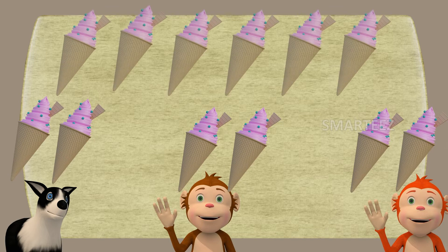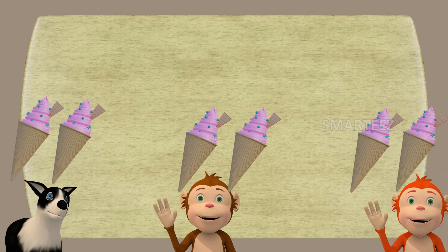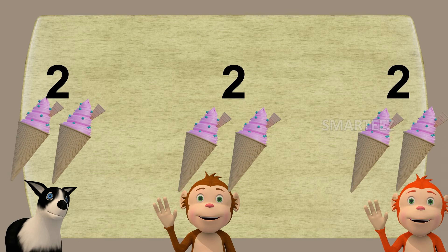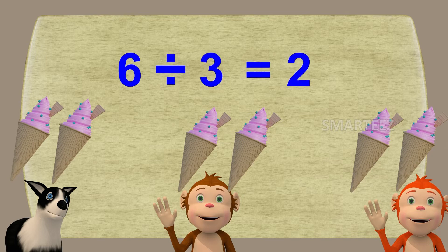I split six ice creams among the three of you and you got two ice creams each. When we split six ice creams between three people, each one gets two ice creams. Six divided by three is two.